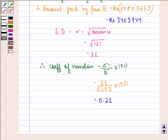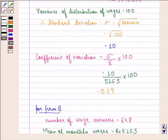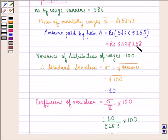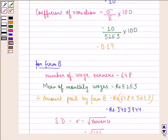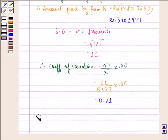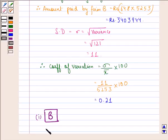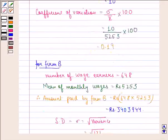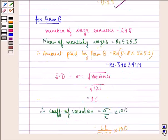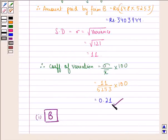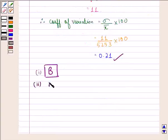For the first question — which firm A or B pays a larger amount as monthly wages — we have seen that for firm A the amount is Rs. 3,078,258 and for firm B it is Rs. 3,403,944. So the answer to the first part is firm B. For the second part — which firm A or B shows greater variability in individual wages — the coefficient of variation for firm B is 0.21 and for firm A is 0.19. Since the coefficient of variation for firm B is greater than that for firm A, the answer to the second part is also firm B, as firm B shows greater variability in individual wages.